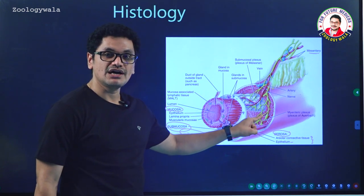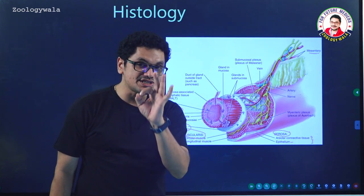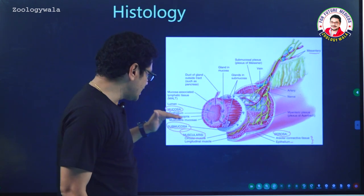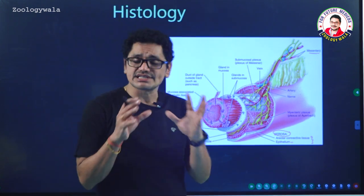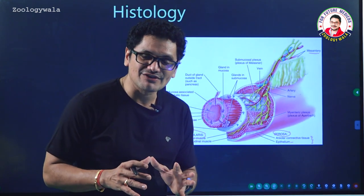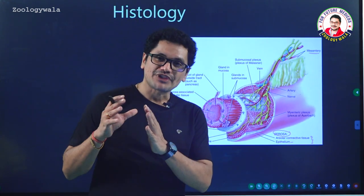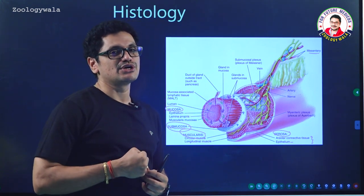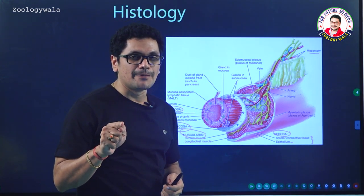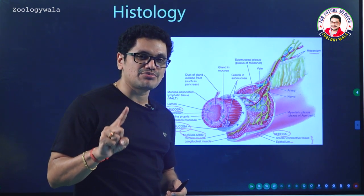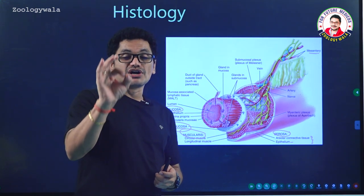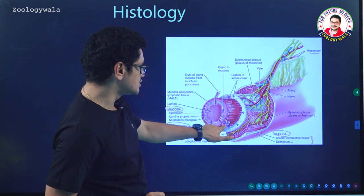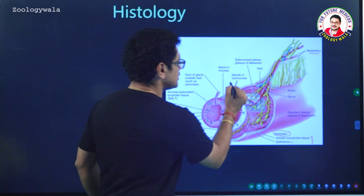Submucosa is the layer present below the muscularis, towards the lumen. Submucosa is the layer which contains a number of nerves, and blood vessels are also present. Loose connective tissue is present in the submucosa. You can see glands in the submucosa as well.